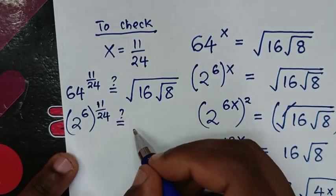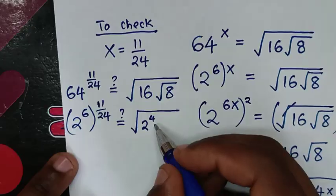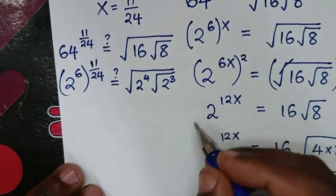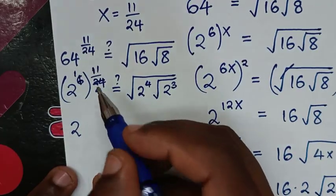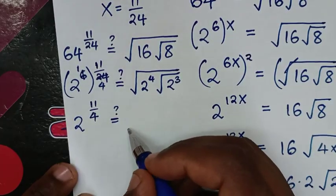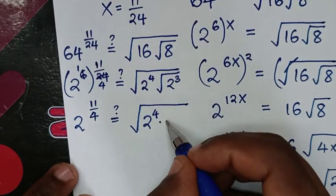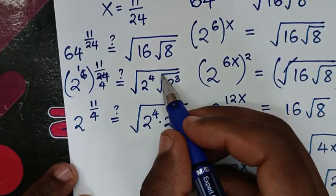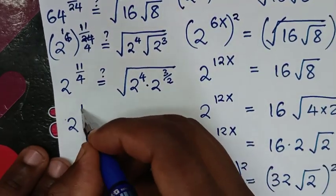On the right-hand side, we have the square root of 16 times the square root of 8. We convert: 16 is 2^4 and 8 is 2^3. The square root of 8, written as 2^3, has the square root expressed as a power of one-half, giving 2^(3/2). So the right side is the square root of 2^4 times 2^(3/2).